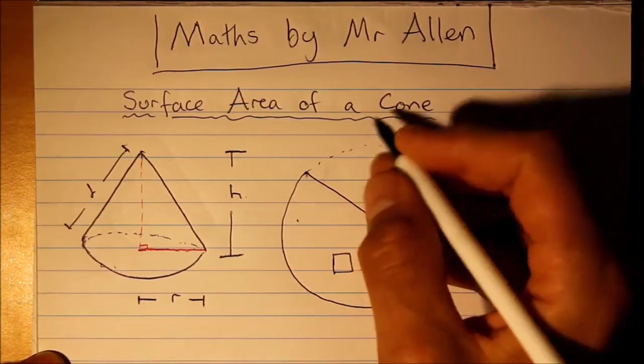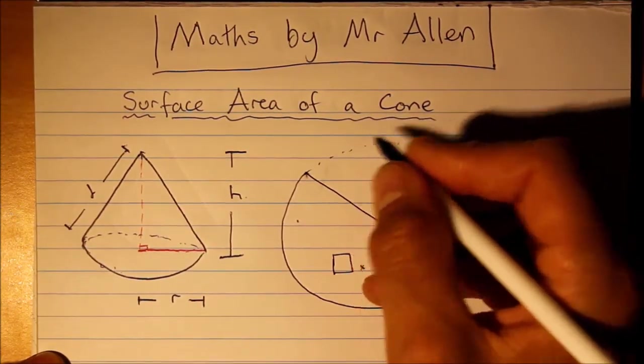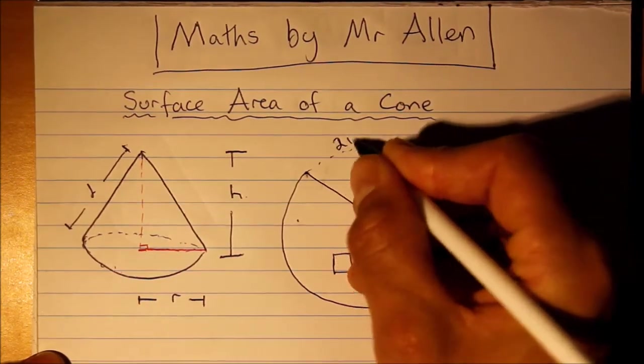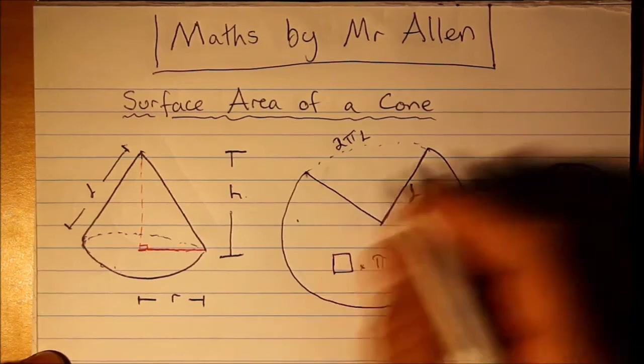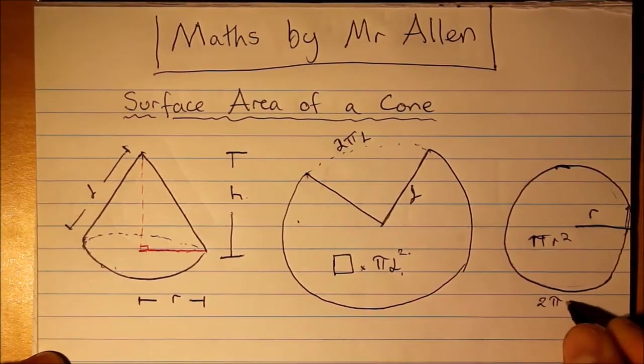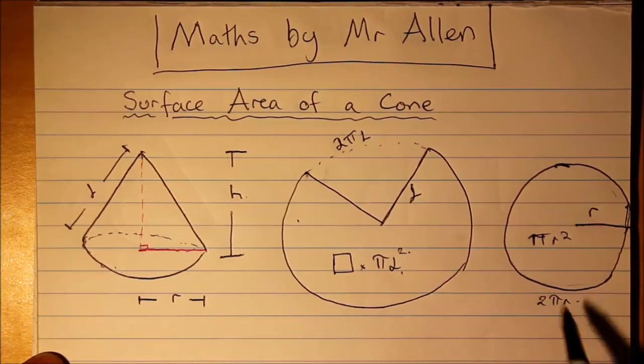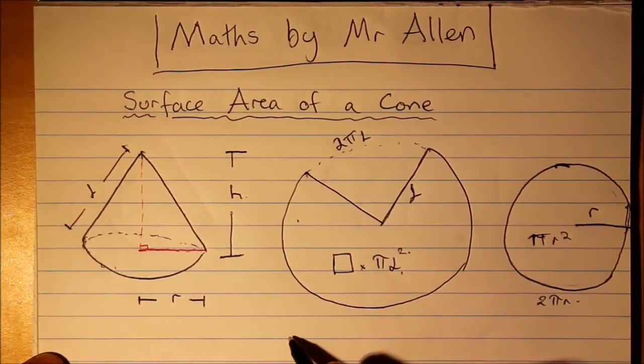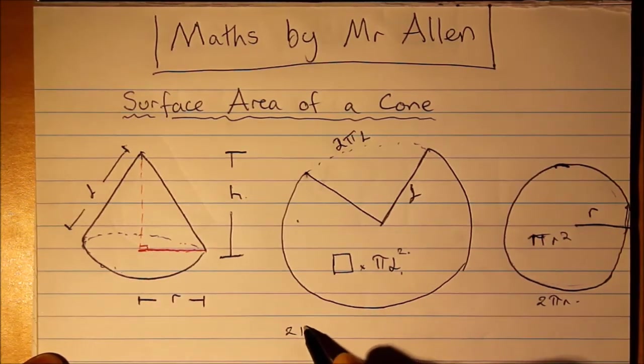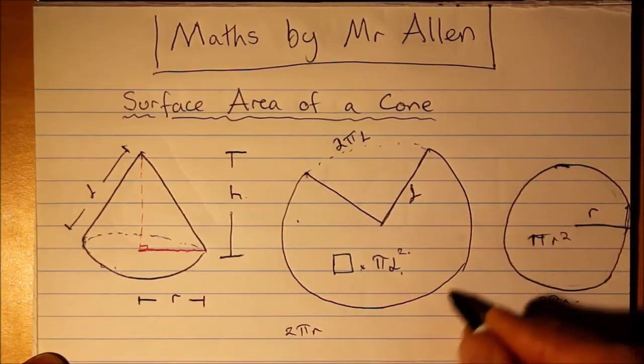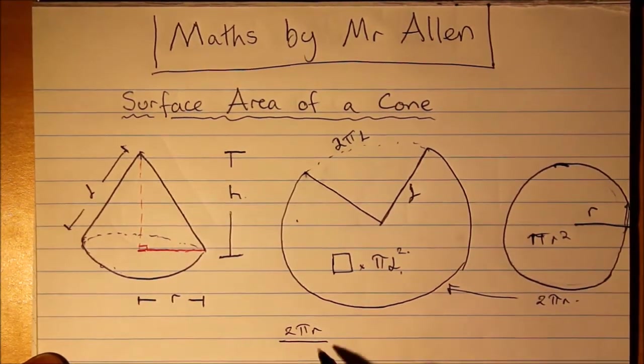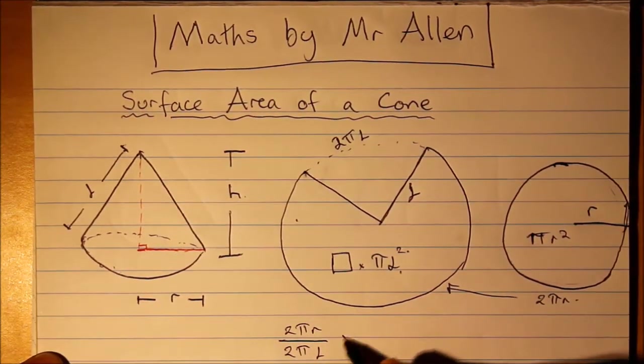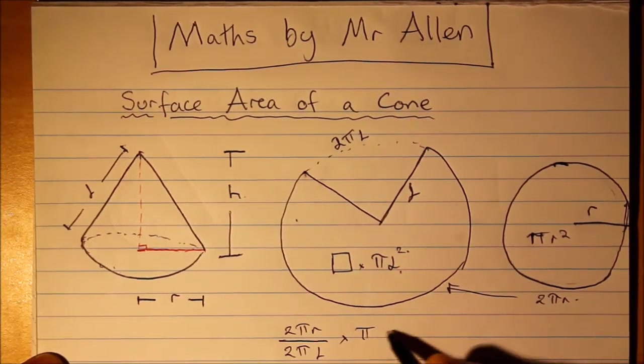What's the circumference of a larger circle? You would have 2πl in this case, and the circumference of the smaller circle is 2πr. So in the end you would get 2πr, which represents this part, as a proportion to 2πl times the area of the full larger circle.